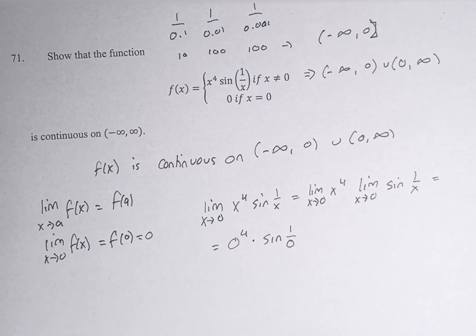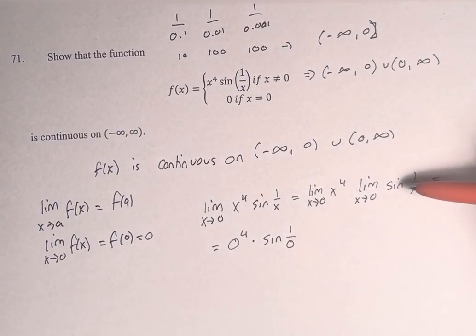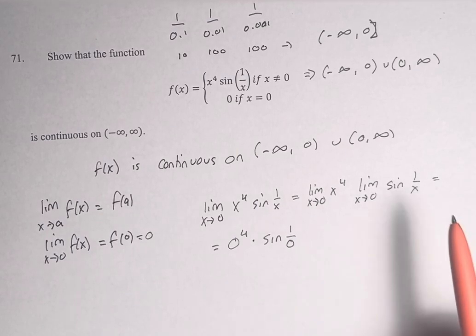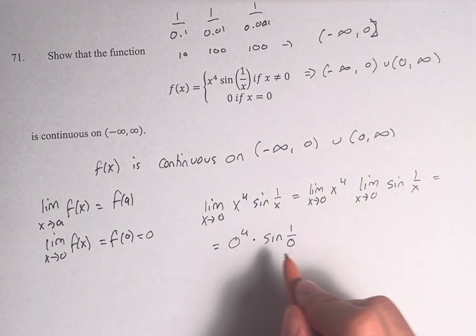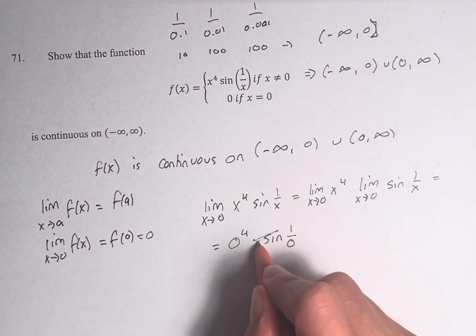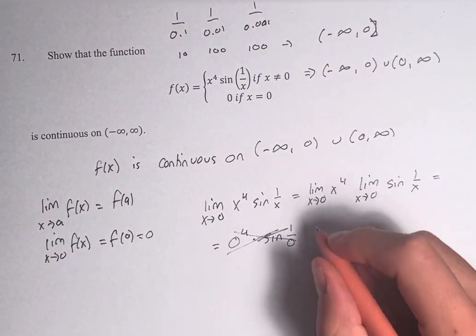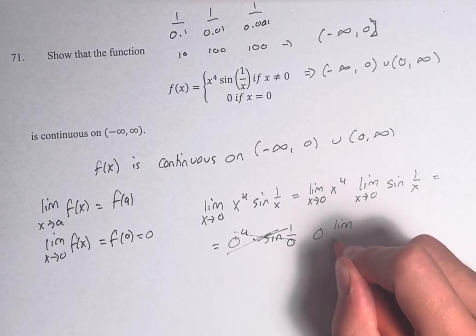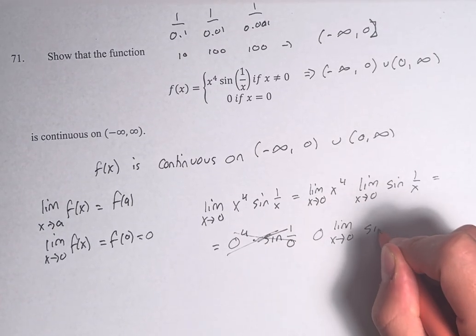Right, and so the value that sine is actually taking here is going off to infinity. But it doesn't matter what value of sine we pick here. We know that the limit of this, right, so skipping this step again, 0 times the limit as x approaches 0 of sine of 1 over x.